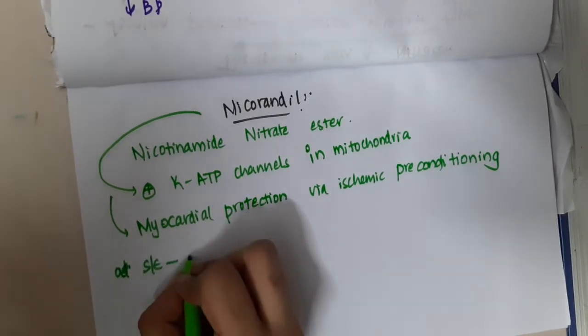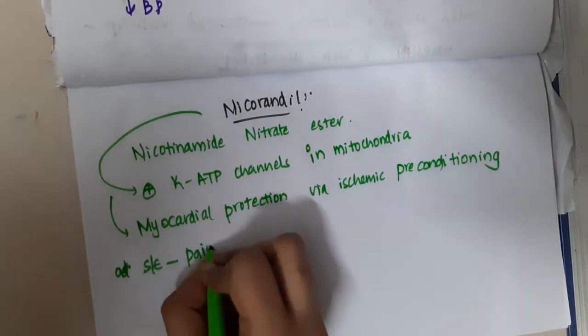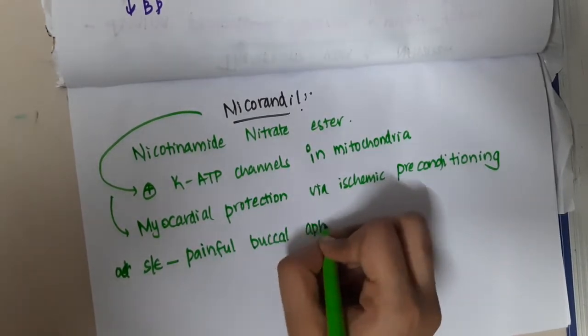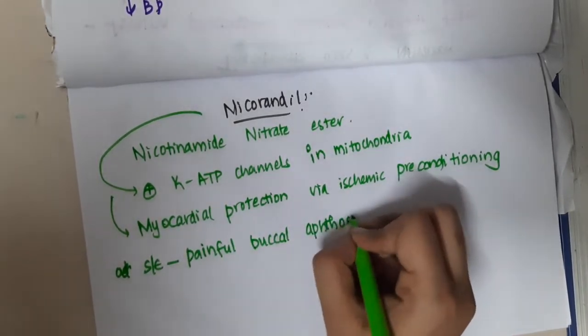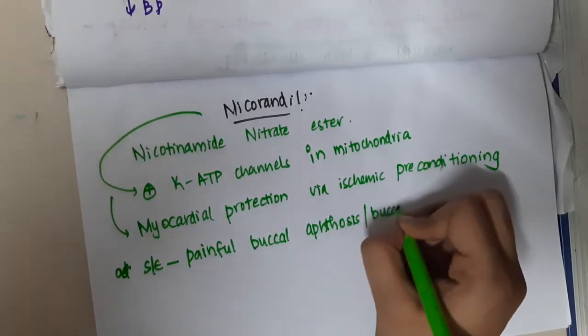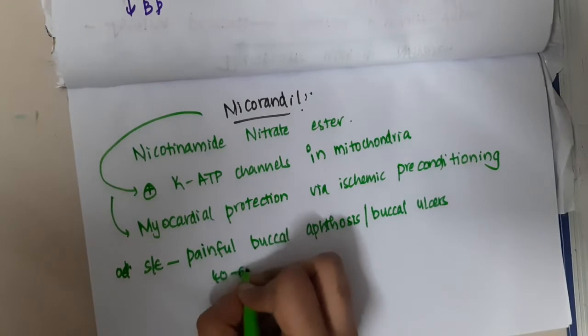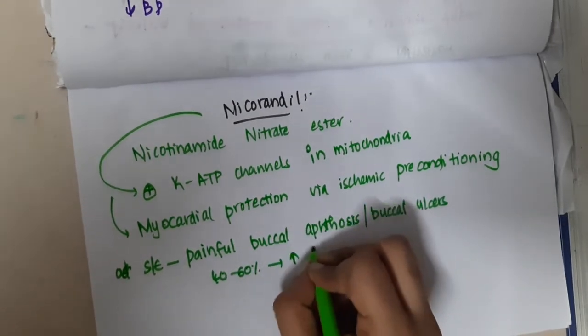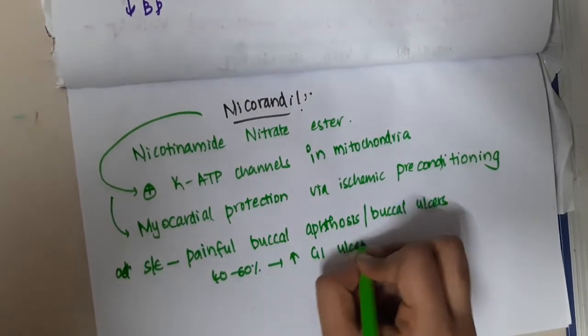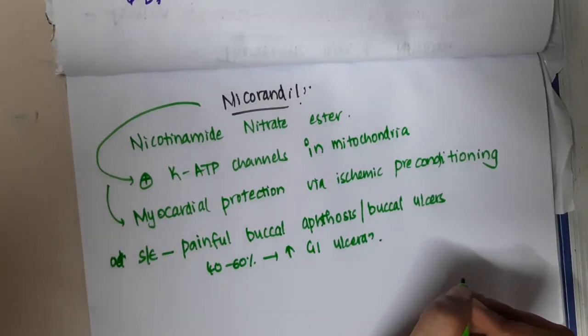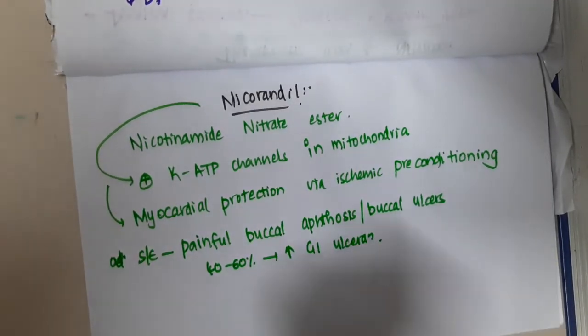Side effects of nicorandil include painful buccal ulcers or aphthosis, and in 40 to 60 percent of patients, increased GI ulcerations. This is about nicorandil. Thank you for watching.